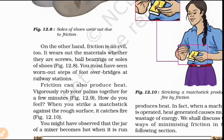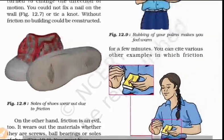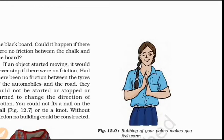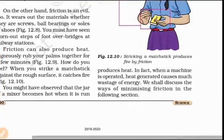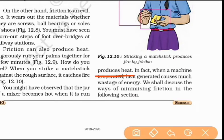When friction is produced, heat is also produced. Friction produces heat. When heat is produced, it results in energy loss, which reduces the efficiency of machinery. So we need to reduce this friction in machines.